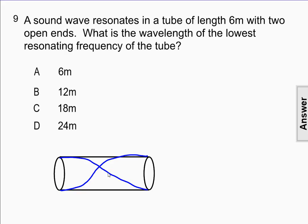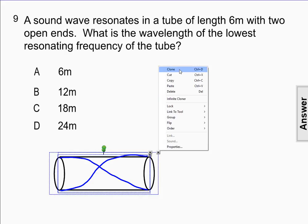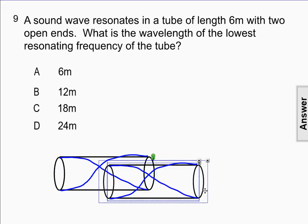So here we have half of a wavelength. To complete this wavelength, we would actually need to double the length of the tube.